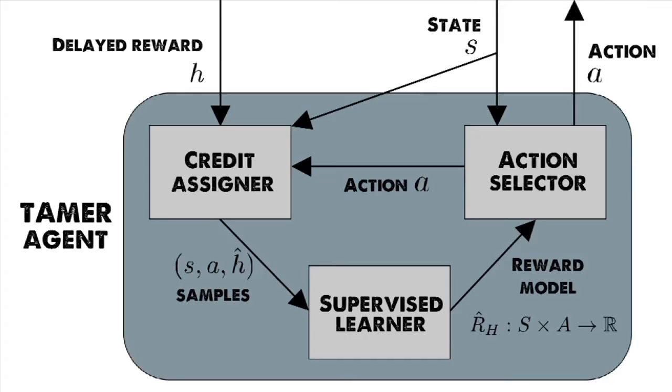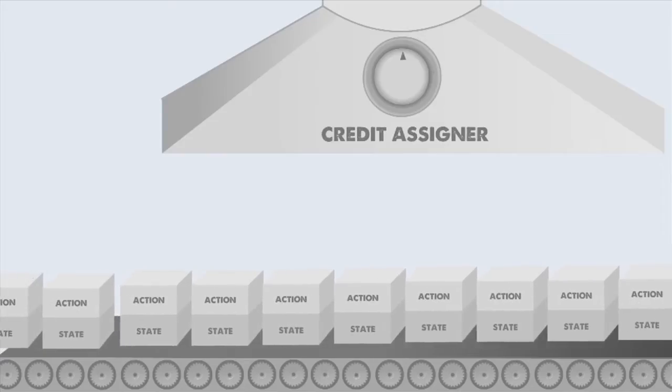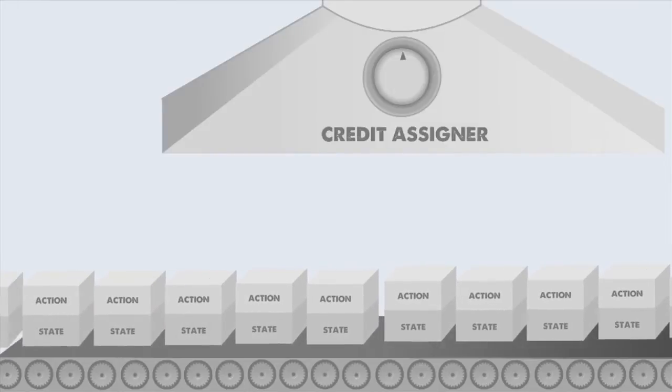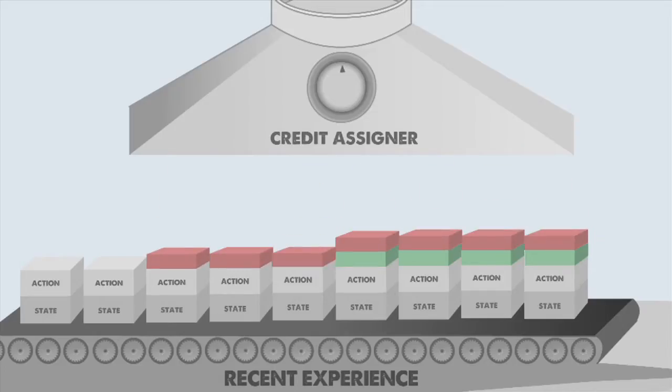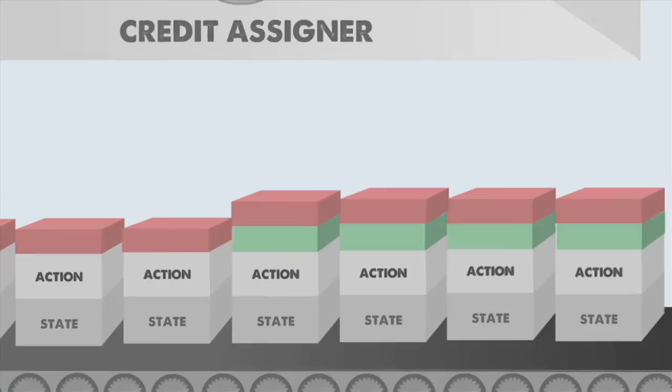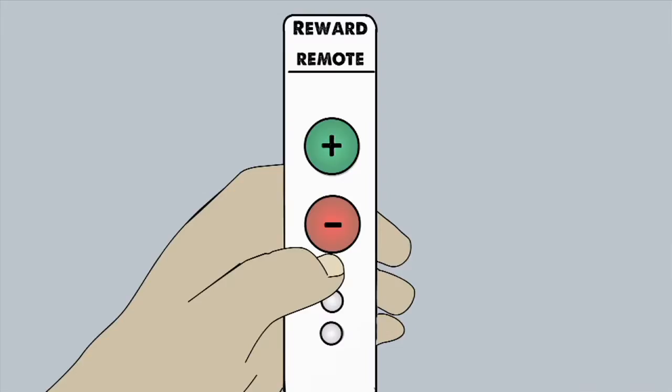The TAMER agent acts and learns through a series of three modules. After a state and action are experienced, they are remembered by the credit assigner module for a short period of time. This credit assigner module receives reward signals and divides credit for each signal among recent pairs of states and actions taken. Each of these state-action pairs can receive shares from multiple reward signals.